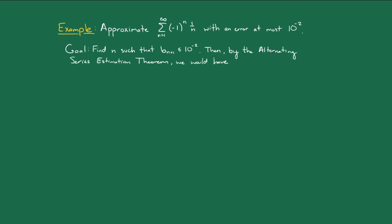Because then, by the alternating series estimation theorem, we would have that the error in approximating the sum s by the nth partial sum is less than or equal to bn plus 1, which we constructed to be less than or equal to 10 to the minus 2. So, we will have successfully bounded the error by 10 to the minus 2, just like we wanted.